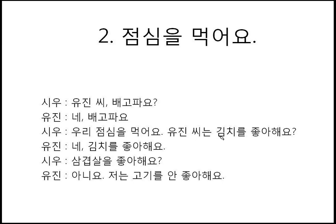유진 씨는 김치를 좋아해요? — Yujin, do you like kimchi? 네, 김치를 좋아해요. — Yes, I like kimchi. 삼겹살을 좋아해요? — Do you like 삼겹살? 아니요, 저는 고기를 안 좋아해요. — No, I don't like meat. Since 삼겹살 is pork — a kind of meat — the answer is not 'I don't like 삼겹살' but rather 'I don't like meat.'